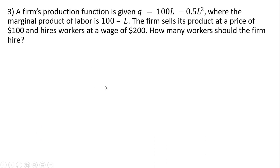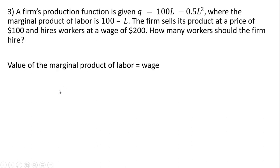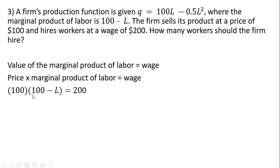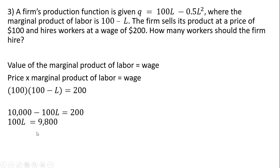In our last question, we have a slightly different functional form for a production function: 100L minus 0.5L squared. Here the marginal product of labor, which is just the derivative of this production function, gives us 100 minus L. The firm sells its product at a price of $100 and hires workers this time at a wage of $200. So we've got the price multiplied by the marginal product of labor, which is 100 minus L, and that equals a wage of $200. Simplifying: 100 times 100 is $10,000, and 100 times minus L is minus 100L. Subtracting $200 from $10,000 and rearranging gives us L equals 98.